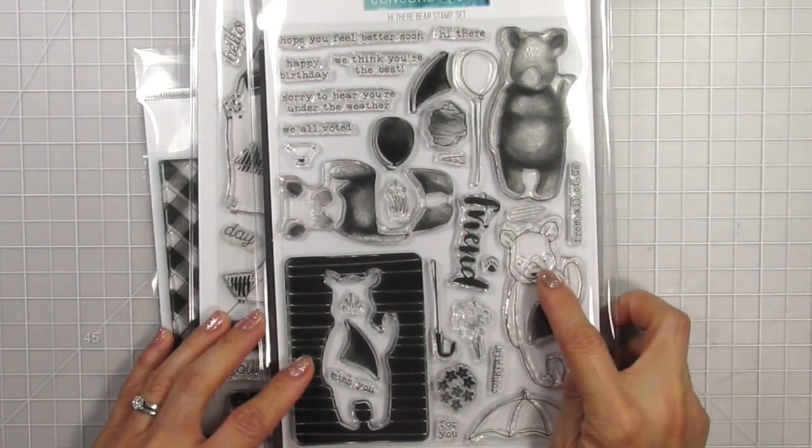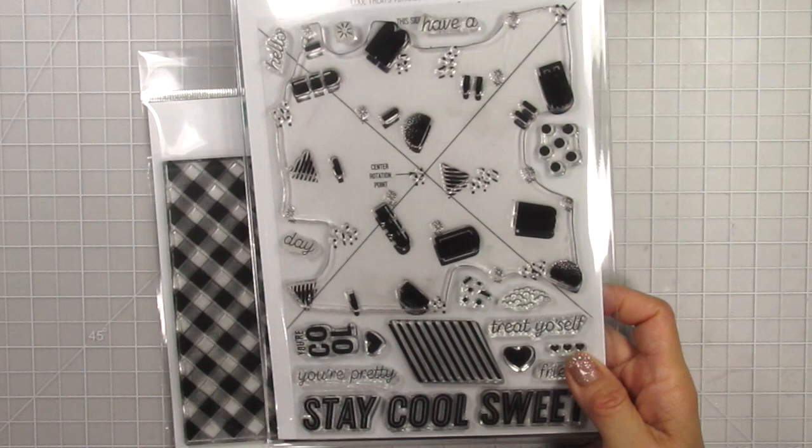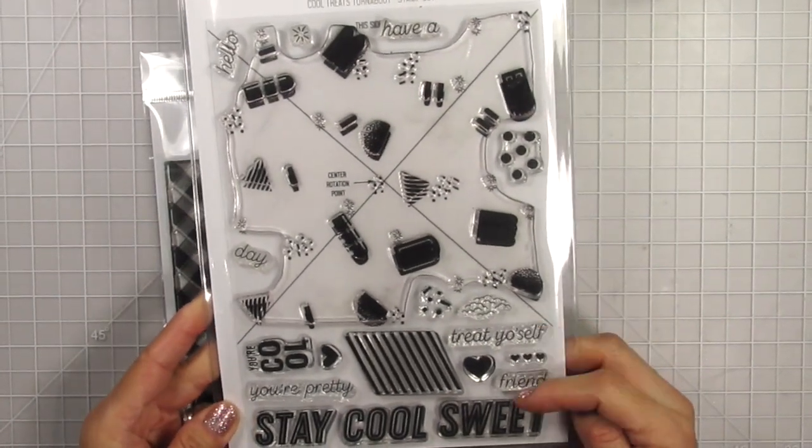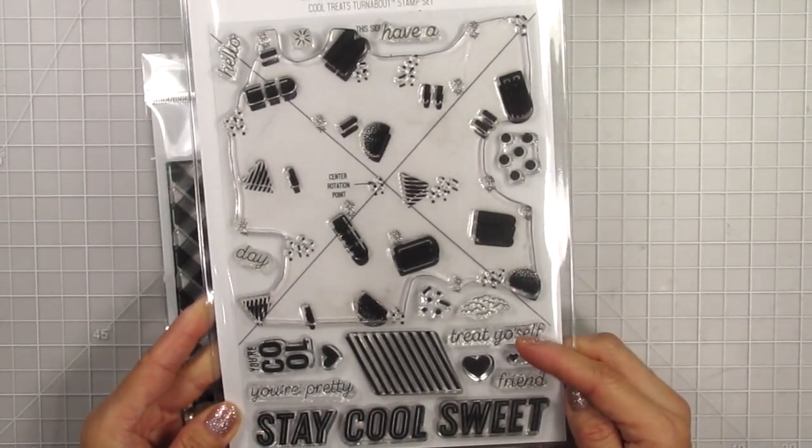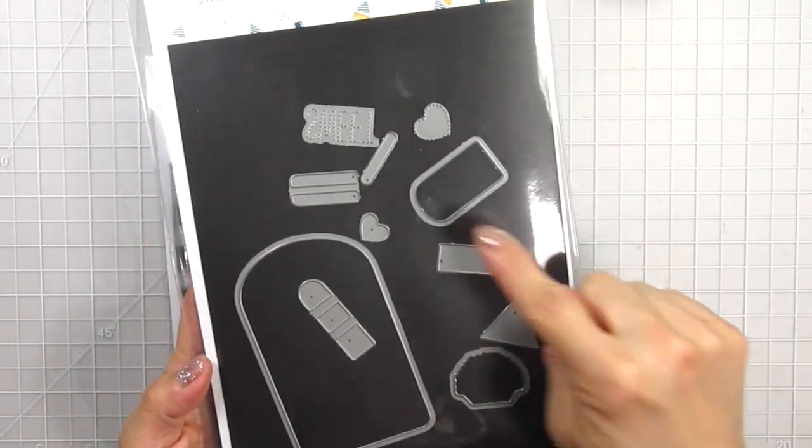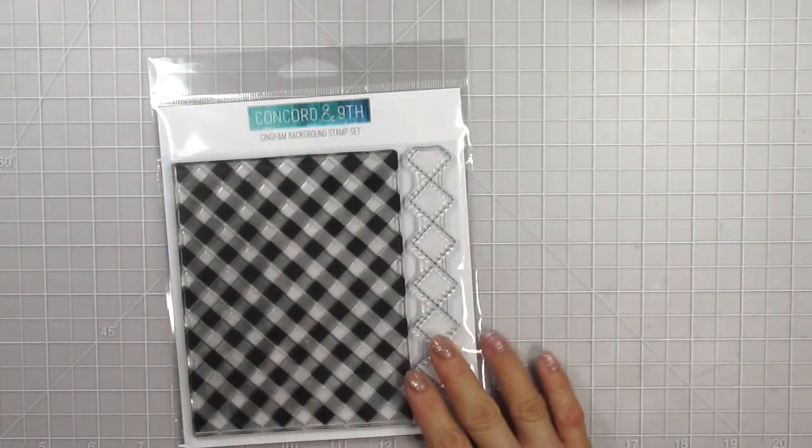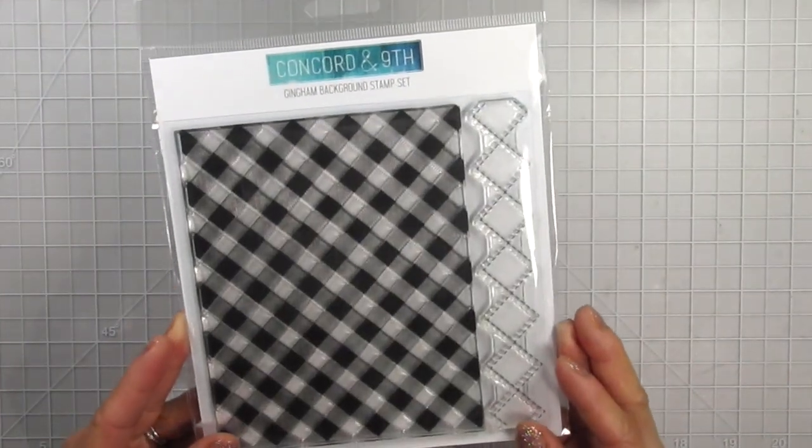There are so many fun accessories and I'll end up using a couple of these instead of the popsicles on the next set, which is the Cool Treats Turnabout stamp set. I had planned on using these sentiments and the coordinating dies but that didn't really work out. This gingham background is one of my favorite background stamps ever because you can do so much with it and by using different color combos no two cards will ever look the same.